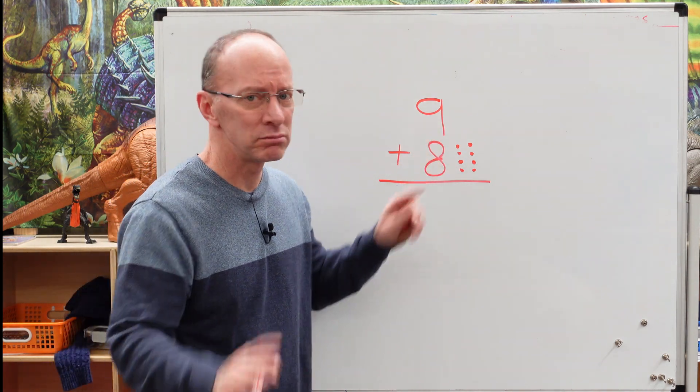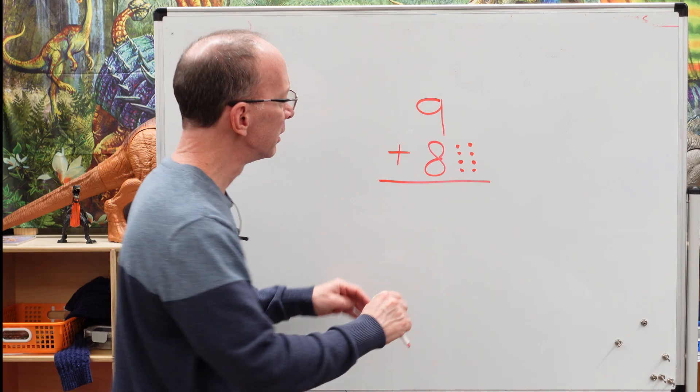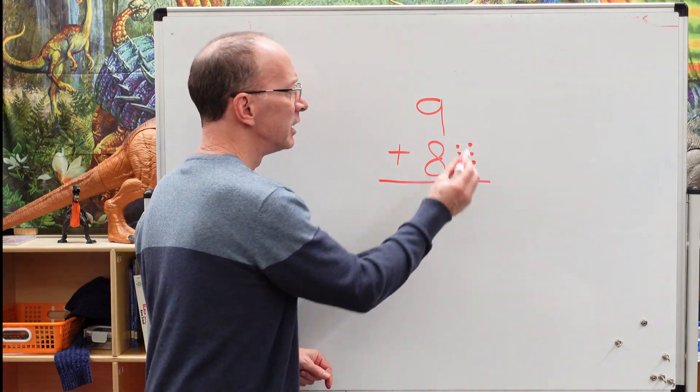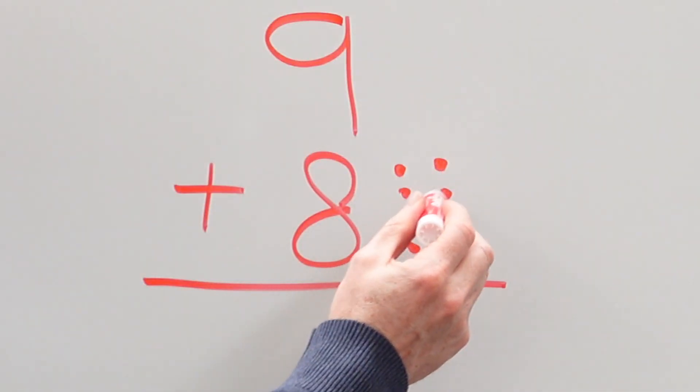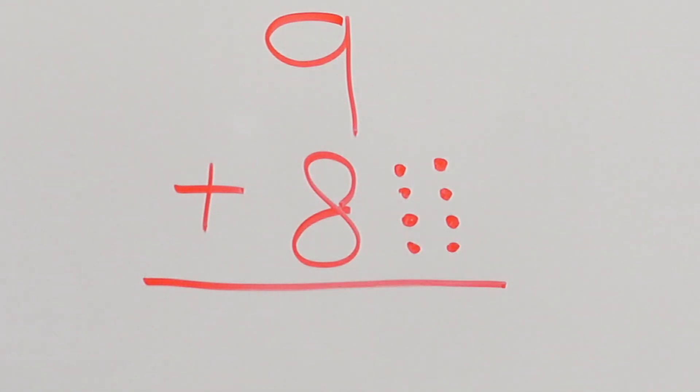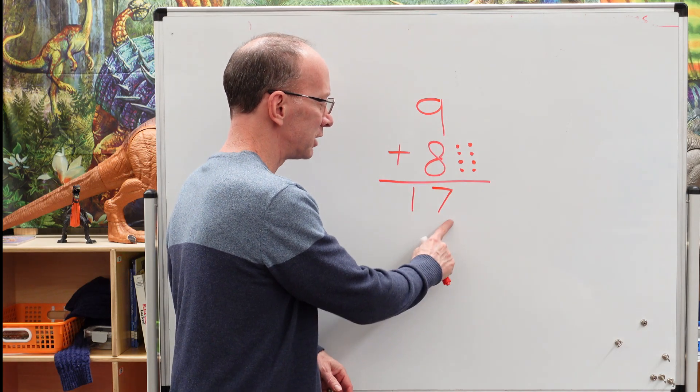Now we're going to do nine plus eight. Take it easy. Let's count together. Nine, ten, eleven, twelve, thirteen, fourteen, fifteen, sixteen, seventeen. Nine plus eight equals seventeen.